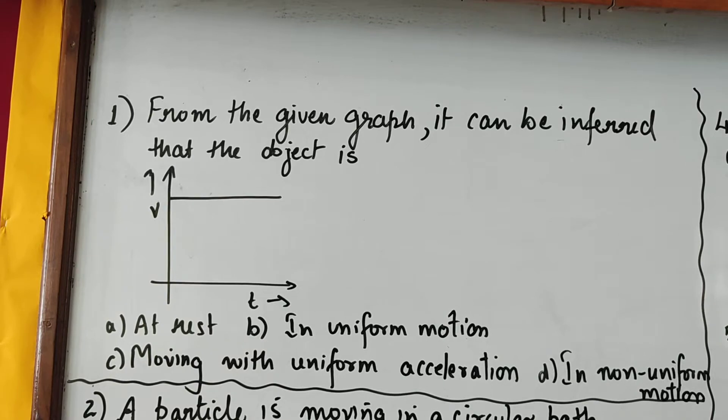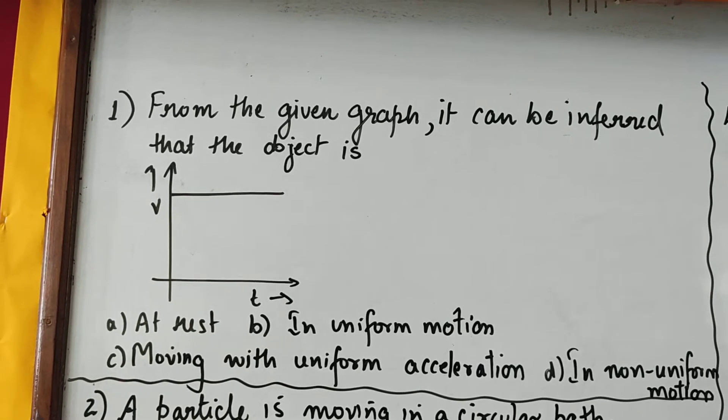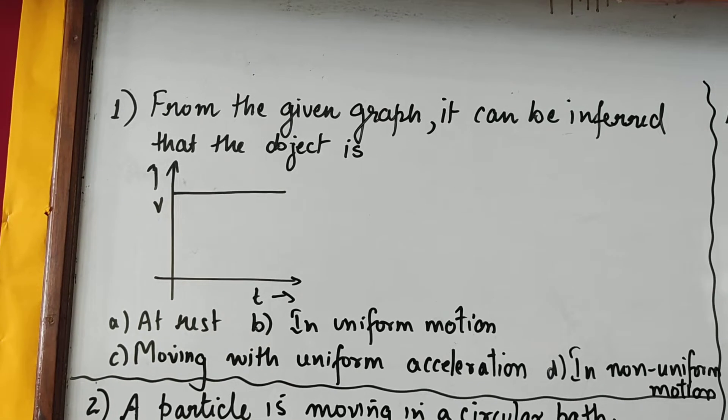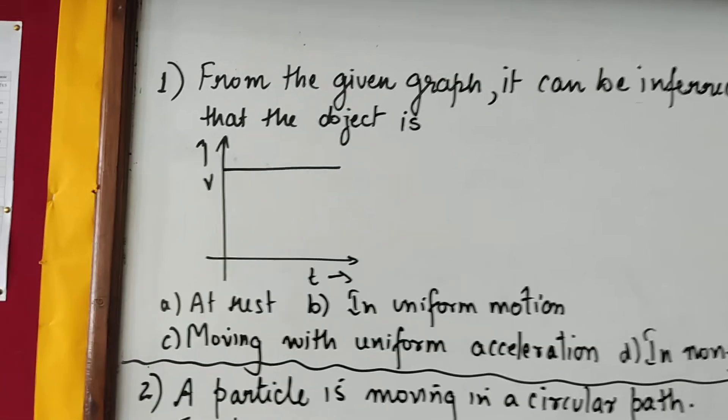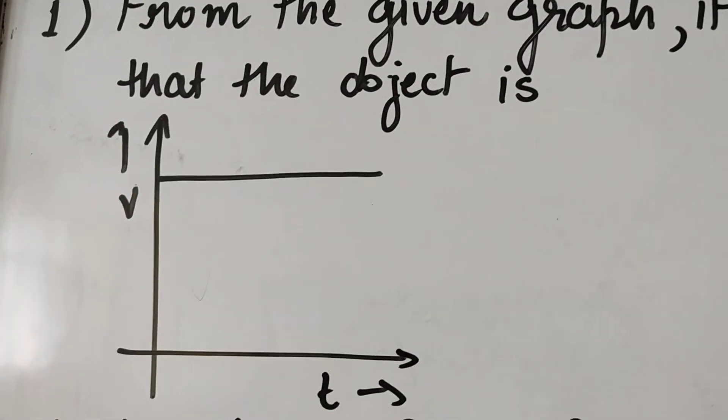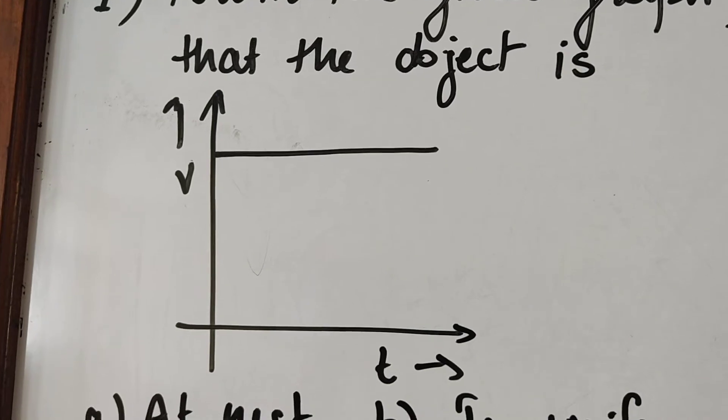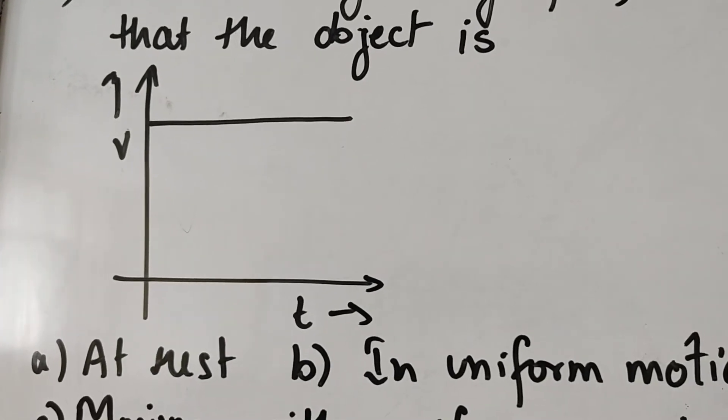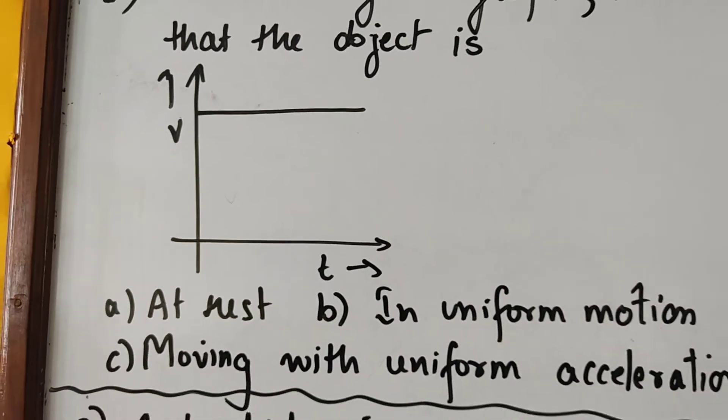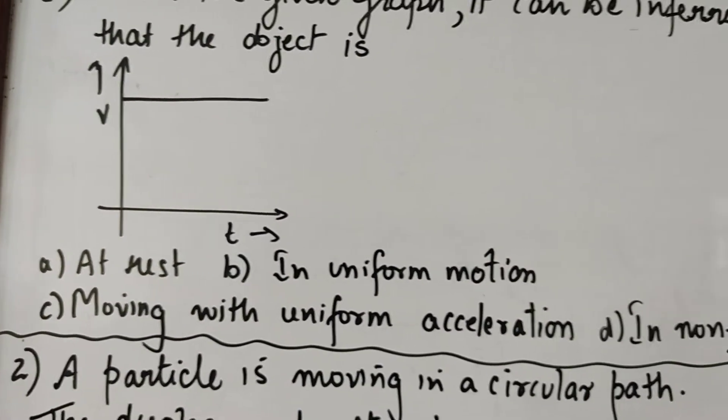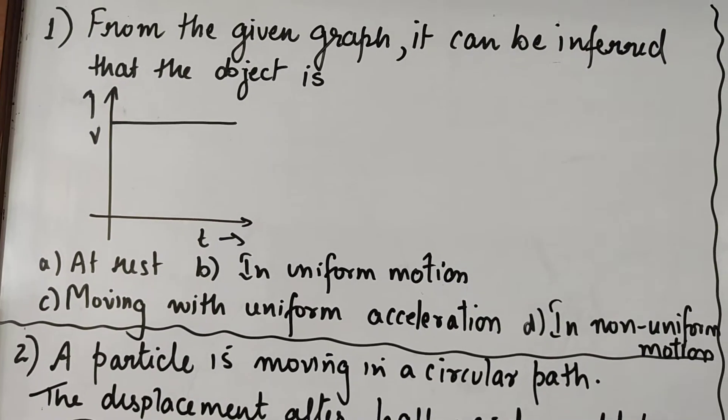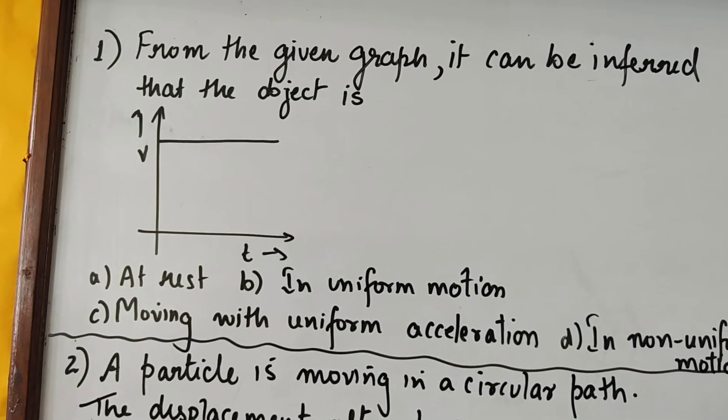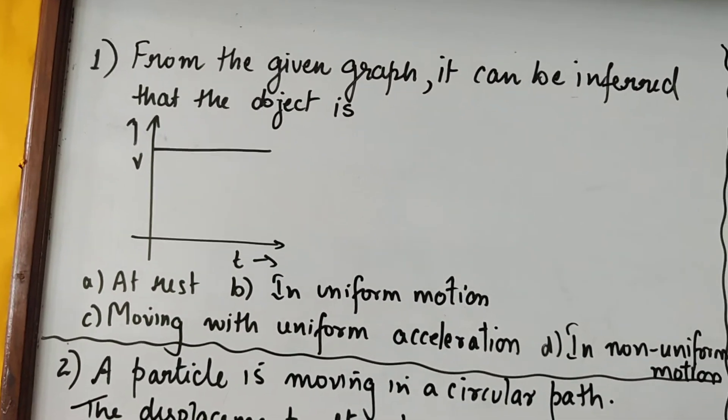So from the given graph, what do we infer? We see that V value remains constant throughout. As time passes, V value remains constant. So this graph, which is a straight line parallel to the time axis, indicates that V value does not change.